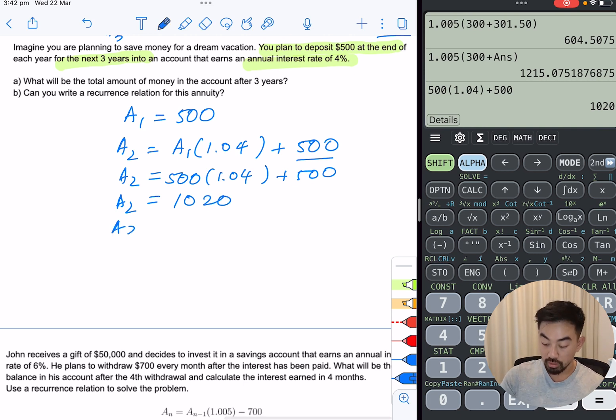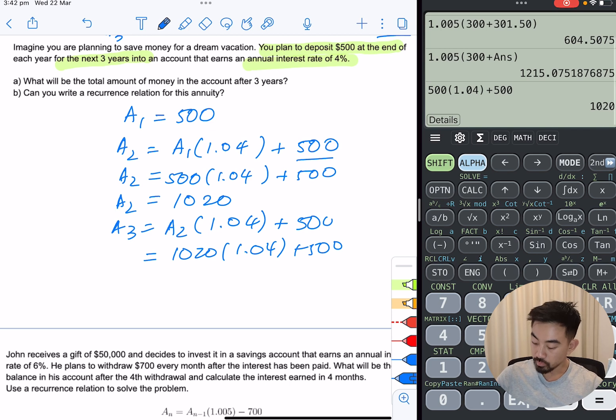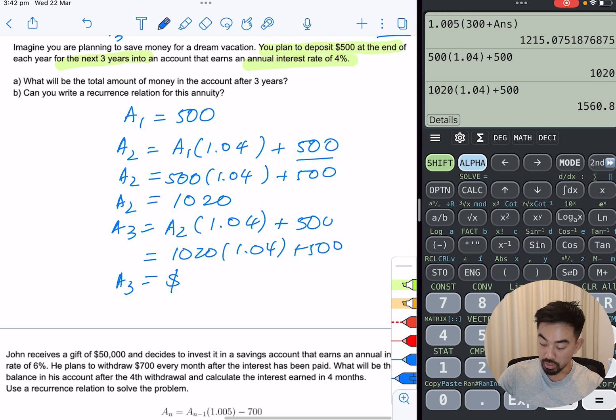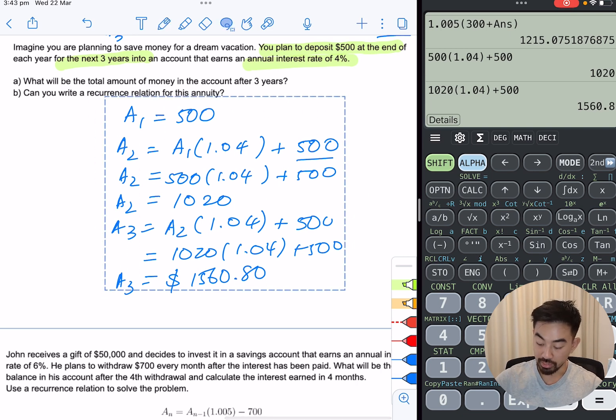Now A3 is going to be what you had in A2, but now you've got 1.04 for the interest plus the $500 you're adding at the end of the year. So $1,020 times 1.04 plus 500. So I'll put down the calculator. So at the end of the third year, you're going to have $1,506.80. That's part A done.